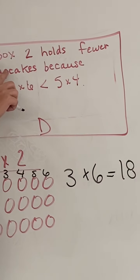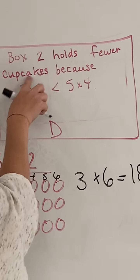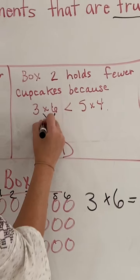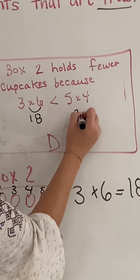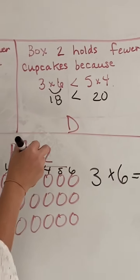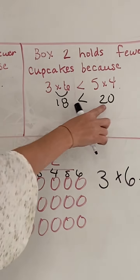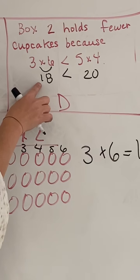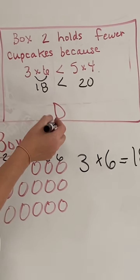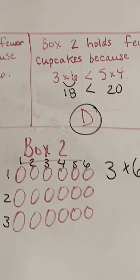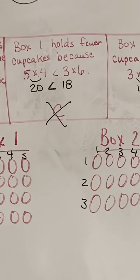So let's look at D. Box two holds fewer cupcakes. Well, we already know our answers. Put our sign in. So is the alligator eating the bigger number? Yes, he's eating the bigger number. So 18 is less than 20. So this one would be true.